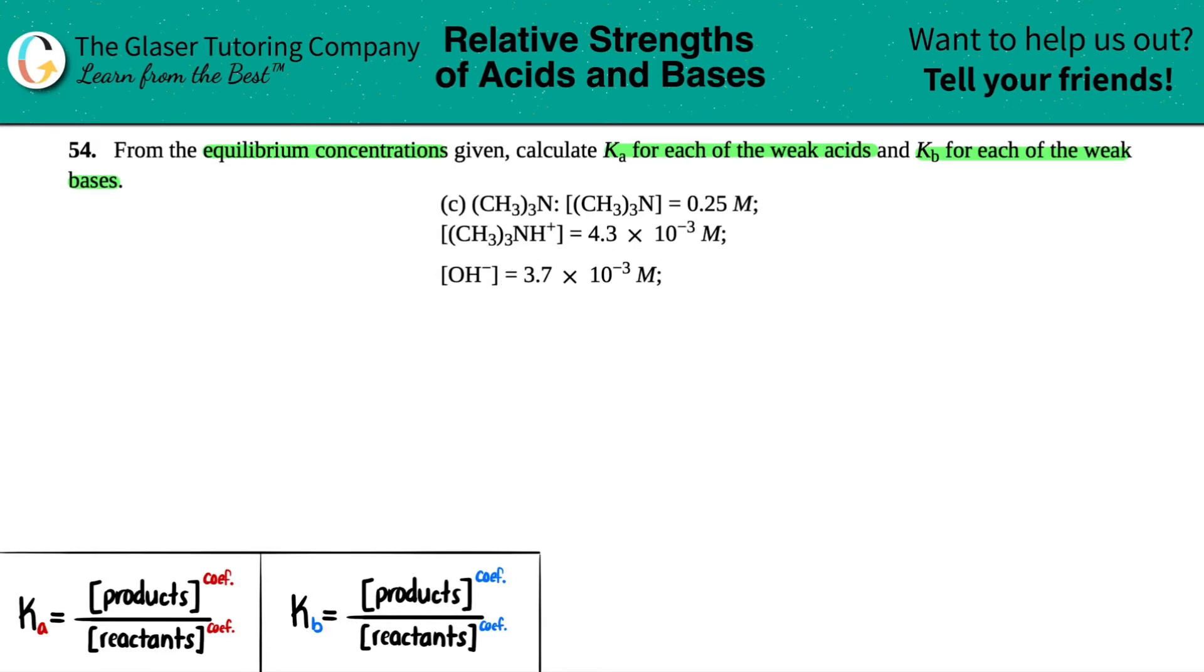So the first question is: are we going to be a weak acid or a weak base? You can figure this out by knowing what you make. If you make hydronium (H3O+), that means you're an acid in solution. However, if you produce OH-, that means you are a base. In this example, (CH3)3N produced OH-, so this is going to be a base, and we're going to be solving for Kb.